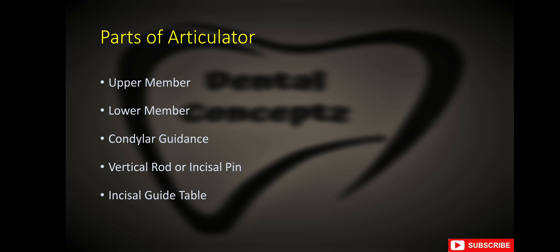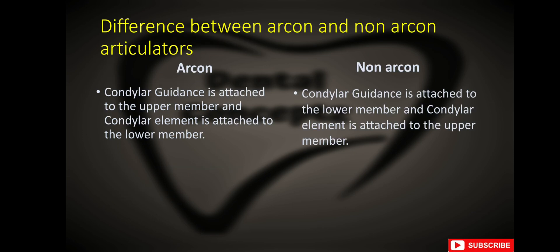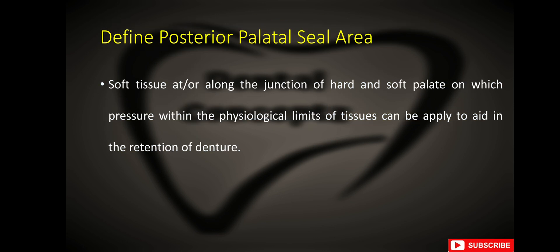What are the parts of an articulator? An articulator has an upper member, lower member, condylar guidance, vertical rod or incisal pin, and incisal guide table. What is the difference between arcane and non-arcane articulators? In an arcane articulator, the condylar guidance is attached to the upper member and condylar element to the lower member, while in a non-arcane articulator the condylar guidance is attached to the lower member and condylar element to the upper member.